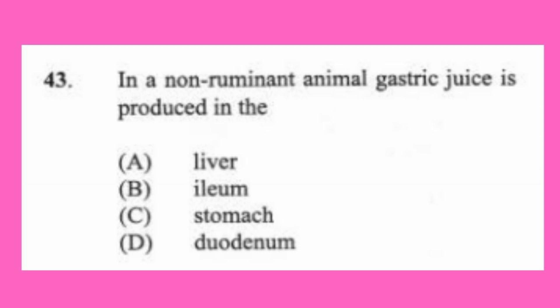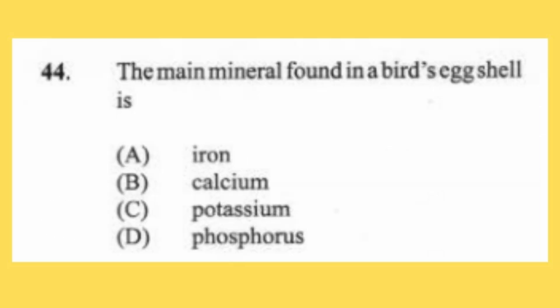Question 43: In a non-ruminant animal, gastric juice is produced in the (a) liver, (b) ileum, (c) stomach, (d) duodenum. The answer is C, stomach. Question 44: The main mineral found in a bird's eggshell is (a) iron, (b) calcium, (c) potassium, (d) phosphorus. The answer is B, calcium.